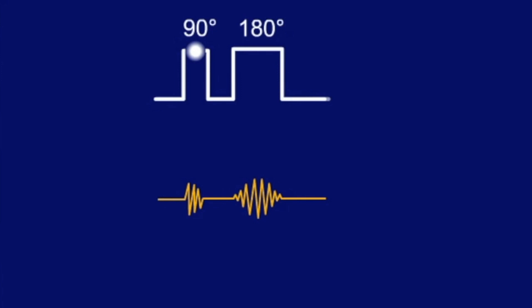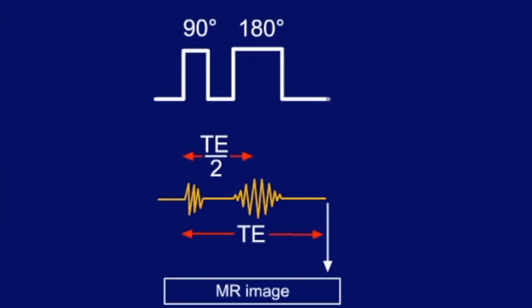However, this is not used to produce an image. Sometime half of TE after the 90 degree pulse, we sent in a 180 degree pulse, which re-phases the protons that are getting out of phase. After the time TE, we get a strong signal, the spin echo.